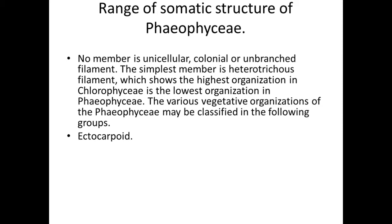The second type is a cable type, observed in species like Mesoglossia. Here the thallus consists of several axis strand-like bundles, and some radial branches come out at right angles from these threads.